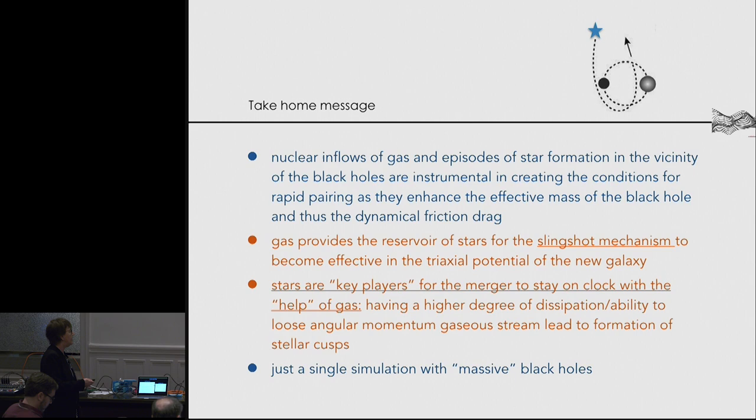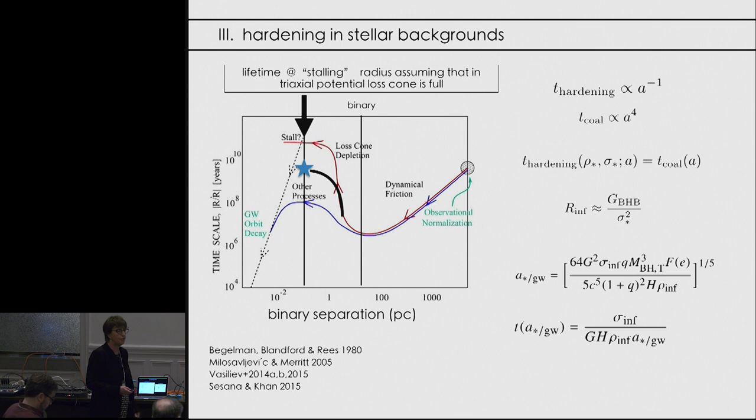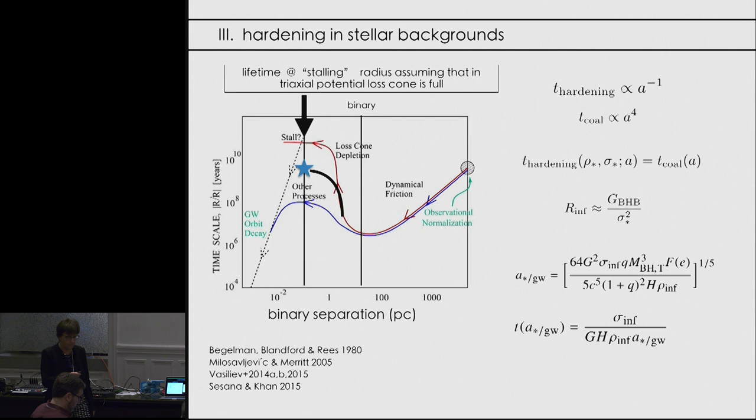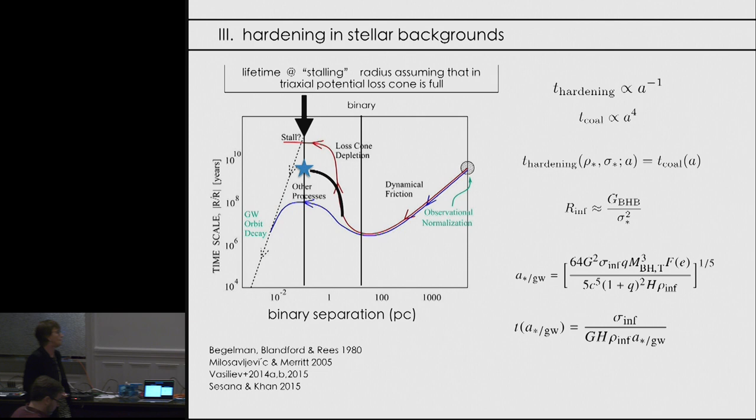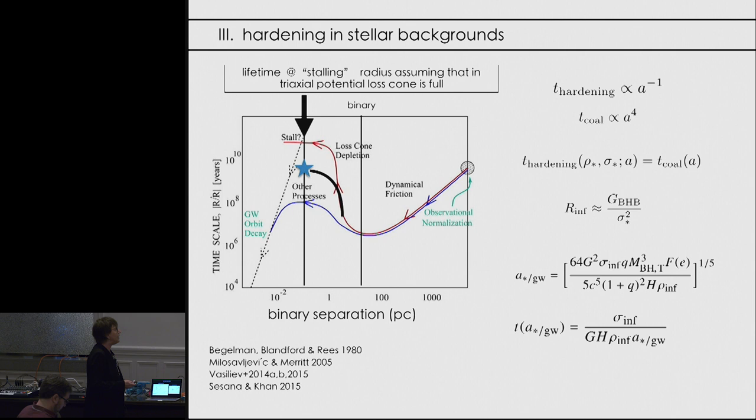This is just one single simulation — the only one in the literature able to encompass the entire dynamical range. I was curious to understand whether black holes of 10^5 solar masses — the LISA black holes — can really reach the microparsec scale on a reasonable timescale.